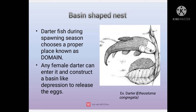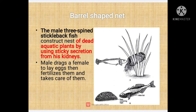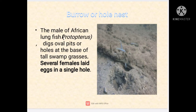The next one is the barrel-shaped nest. In this method the male of the three-spined stickleback fish constructs a nest using sticky secretions from its kidney among dead aquatic plants, where the male drags a female to lay their eggs. The male then fertilizes them and takes care of them.